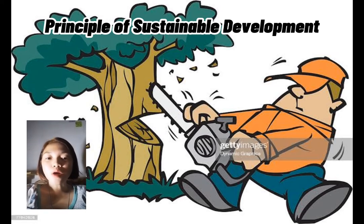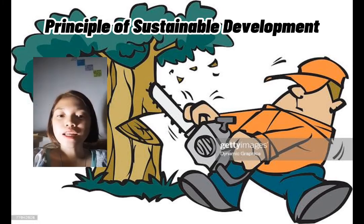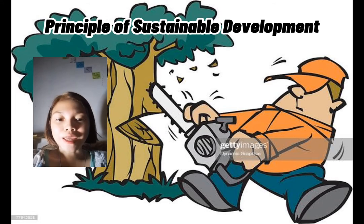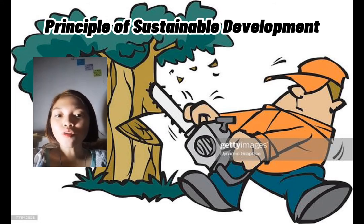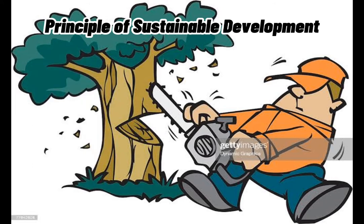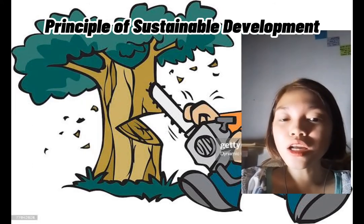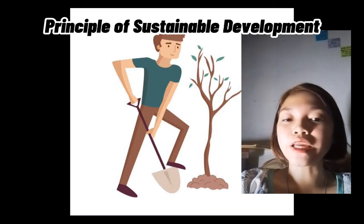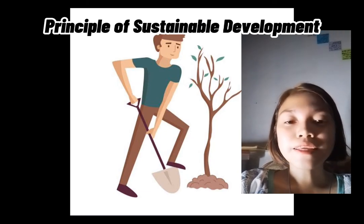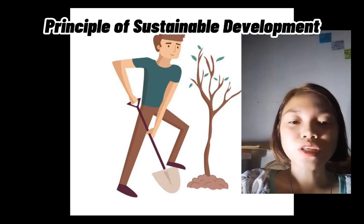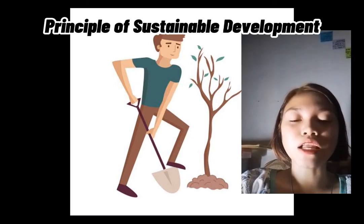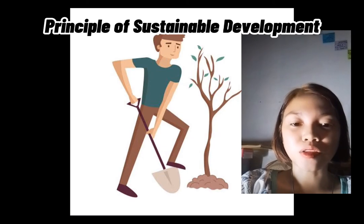Ang halimbawa nito ay ang pagputol ng puno. Ang pagputol ng puno ay kinakailangan dahil ito ay ginagamit natin sa papel o kung anuman. Pero kung puputol ng puno ay kailangan ay magtanim rin. Yan ang batasang principle of sustainable development na ipinagtupad.